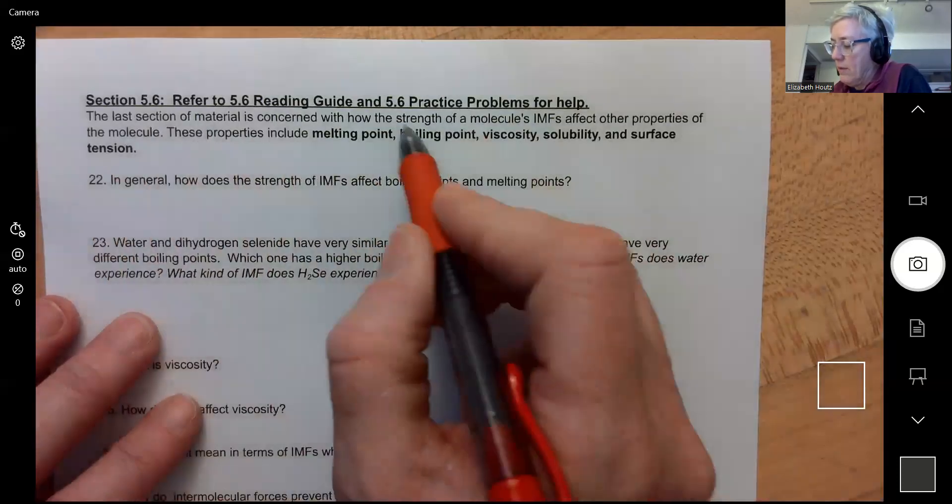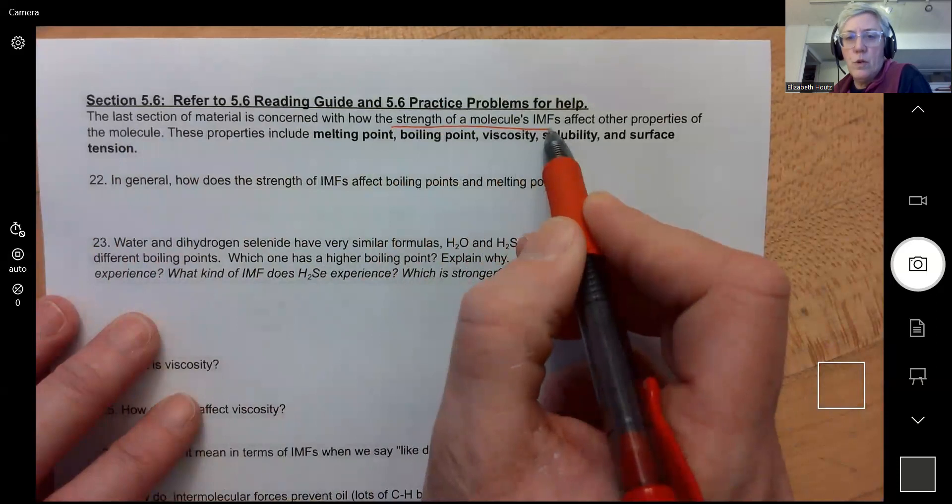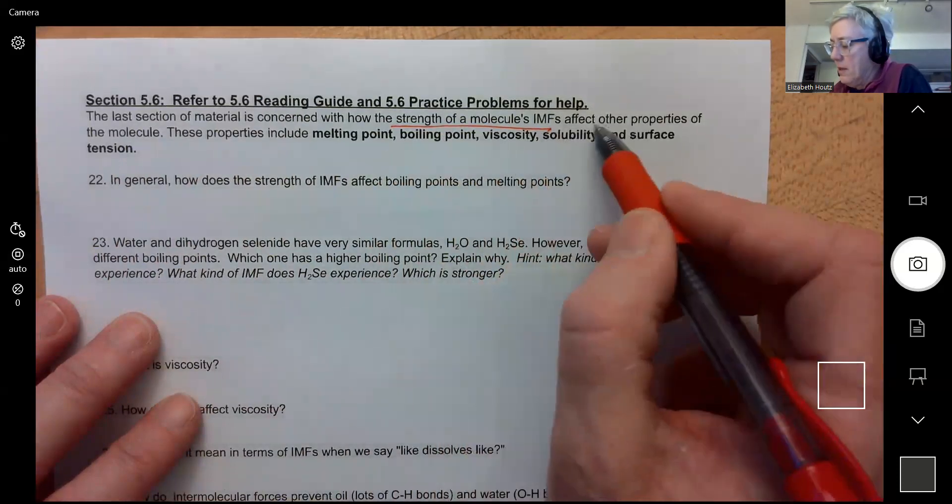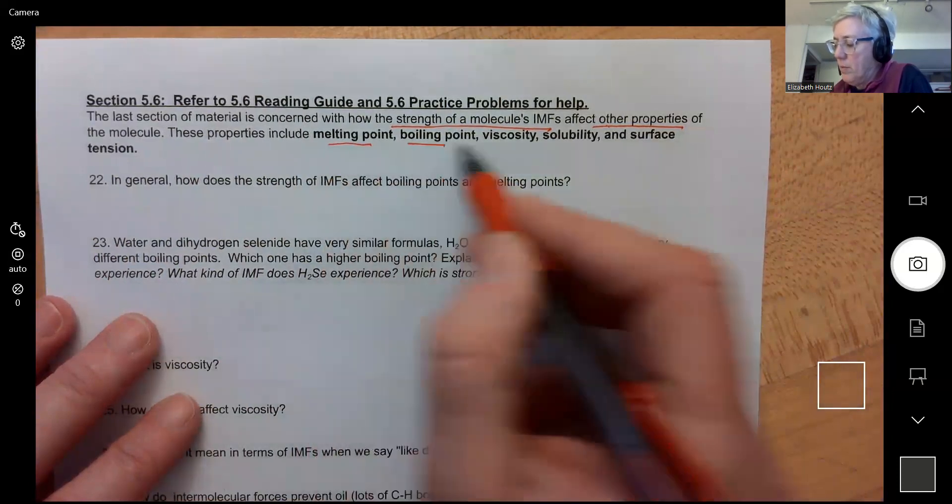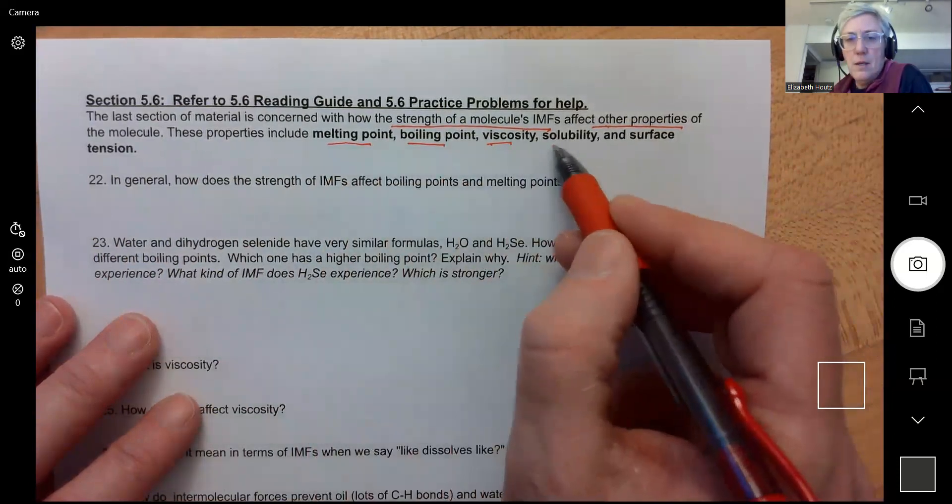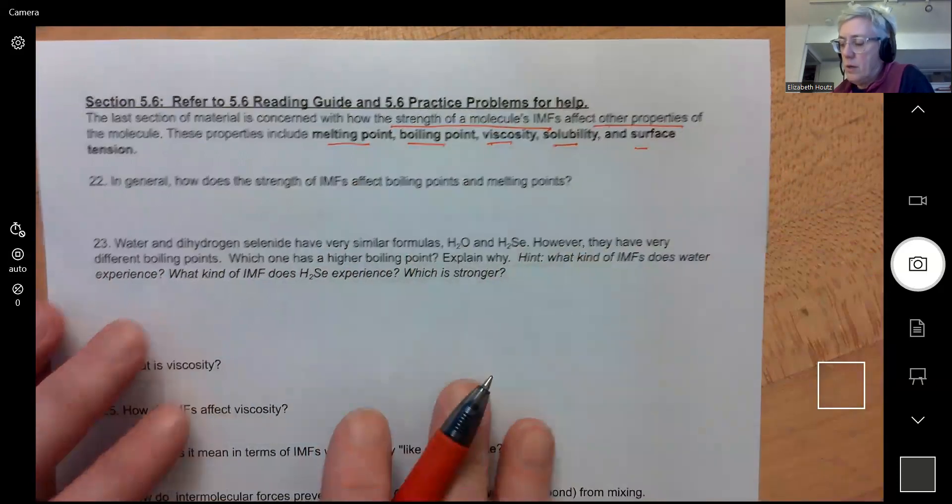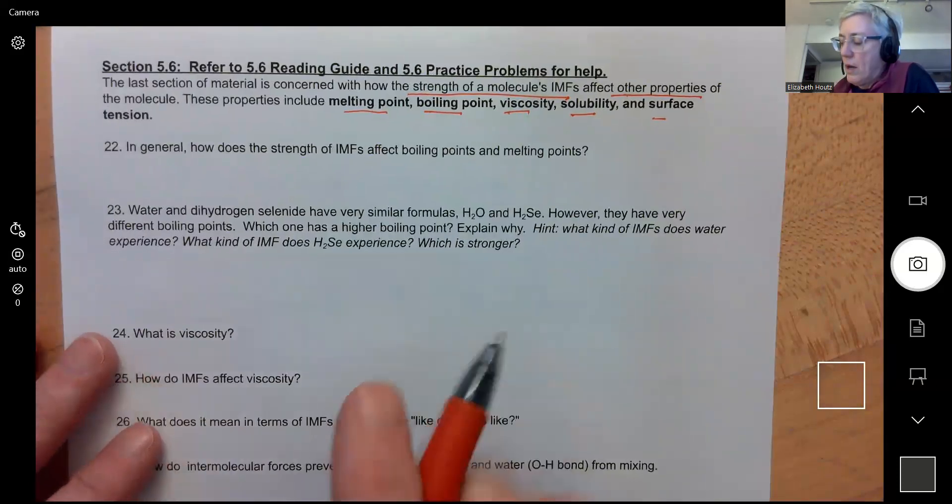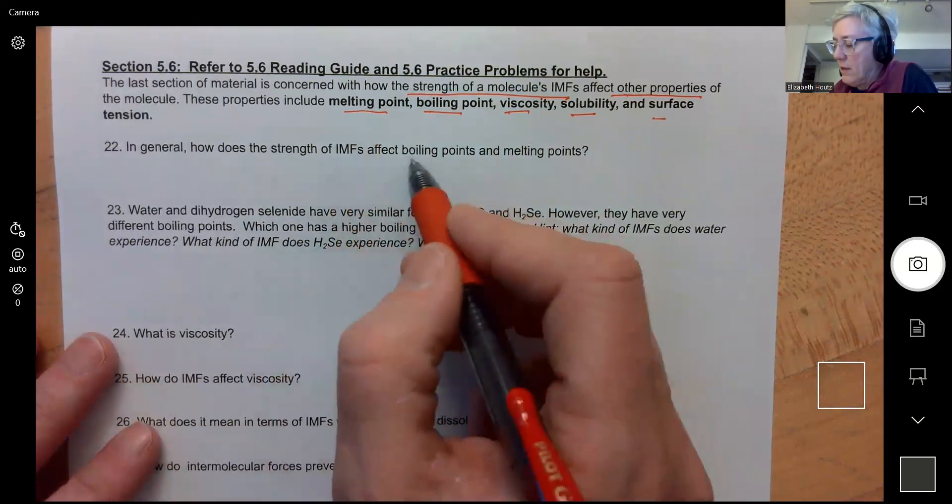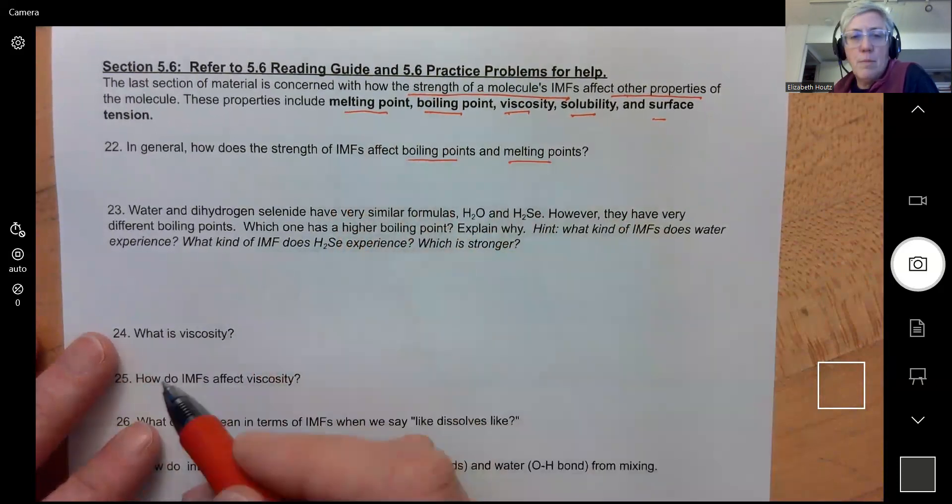Now we're going to talk about properties of molecules depending upon their intermolecular forces. Because the strength of a molecule's intermolecular force affects many other properties of the molecule, things like melting point, boiling point, viscosity, solubility, and surface tension. So question 22: In general, how does the strength of intermolecular forces affect boiling points and melting points?